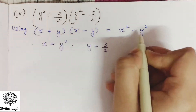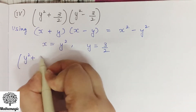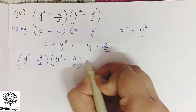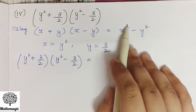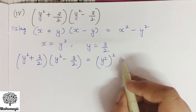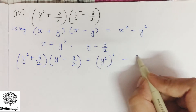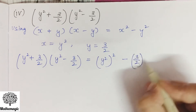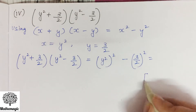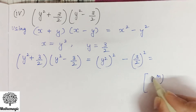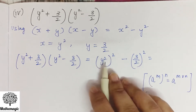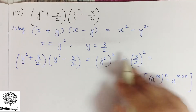Using this identity we will get: y square plus 3 by 2 into y square minus 3 by 2 is equal to x square minus y square. x is y square, so y square ka square ho jayega, minus y square is 3 by 2 ka whole square. We will use the law of exponent here, which says a power m whole power n equals a to the power m into n.